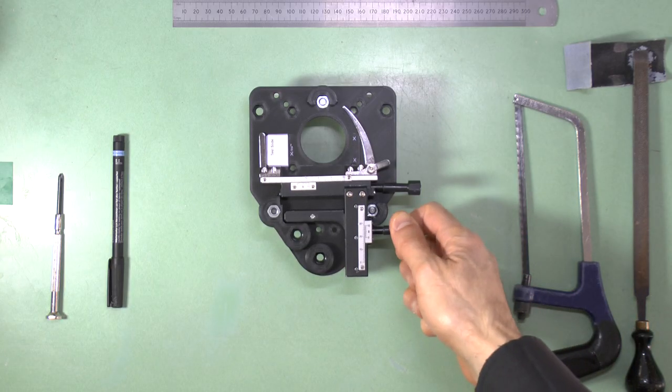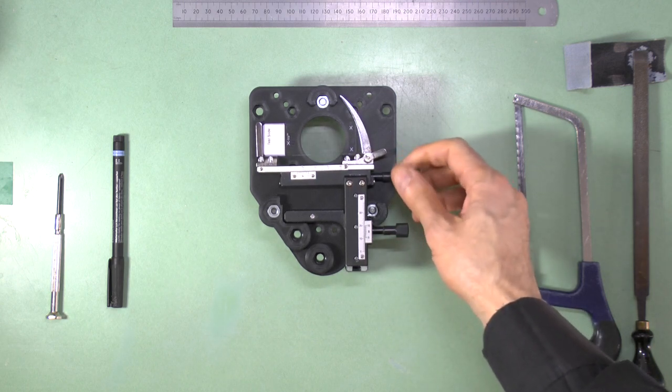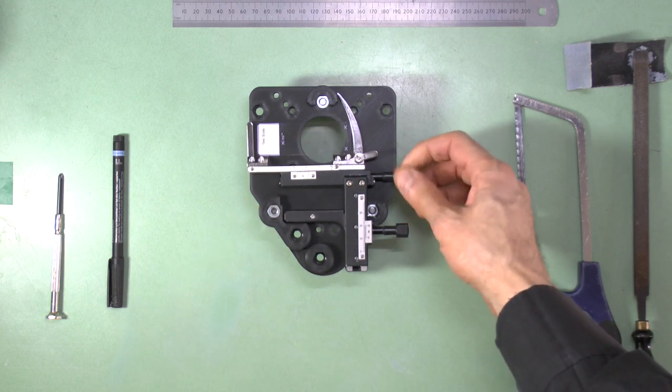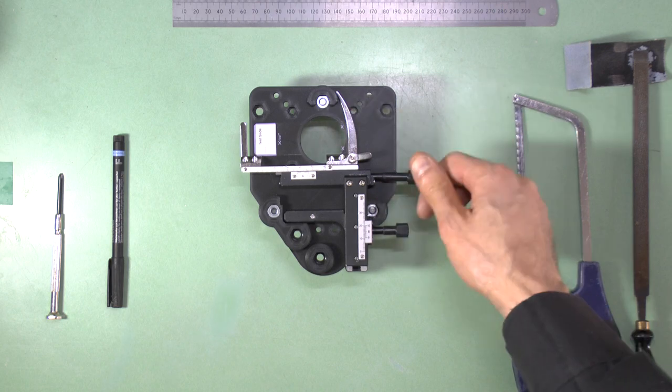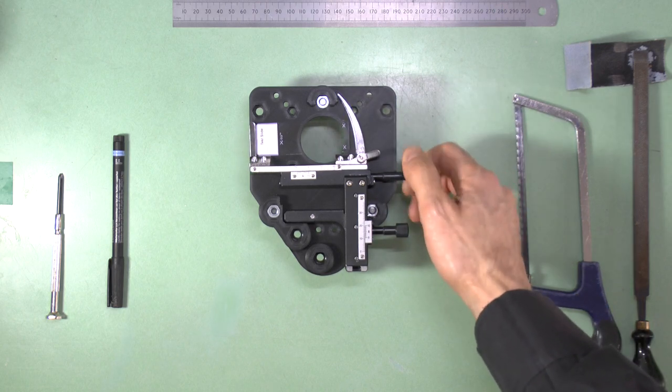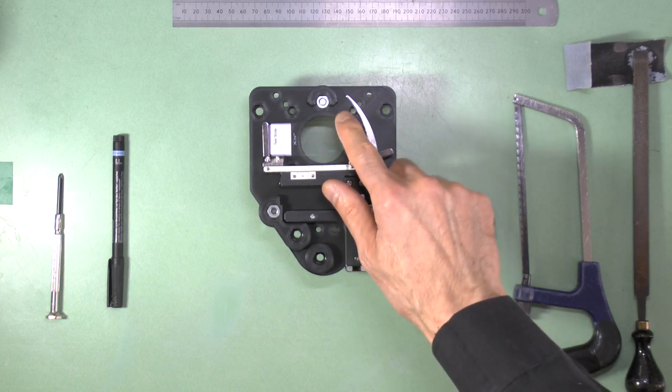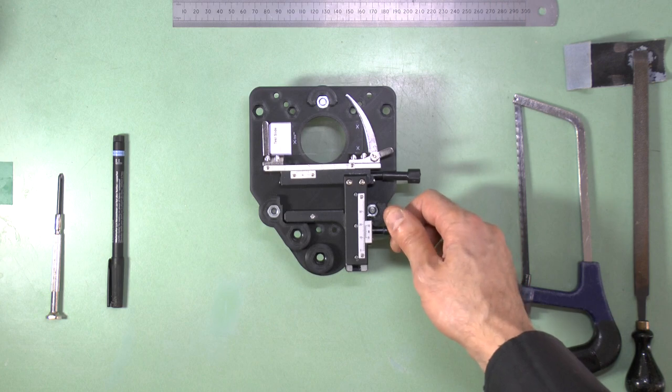Both types of slide holder need some modification before use. The first modification is the need to truncate the long curved arm. This must be shortened otherwise it gets caught on the Puma front focus post. It's important not to shorten it too much though because then it won't hold the slide well. The correct procedure and measurement to truncate it are as shown in these figures.